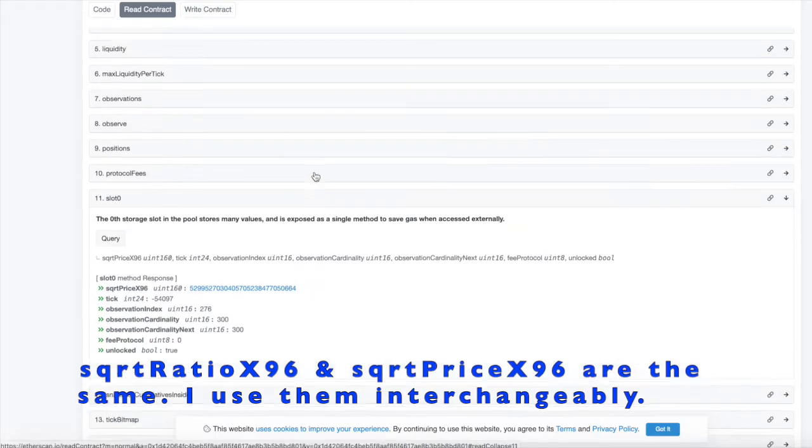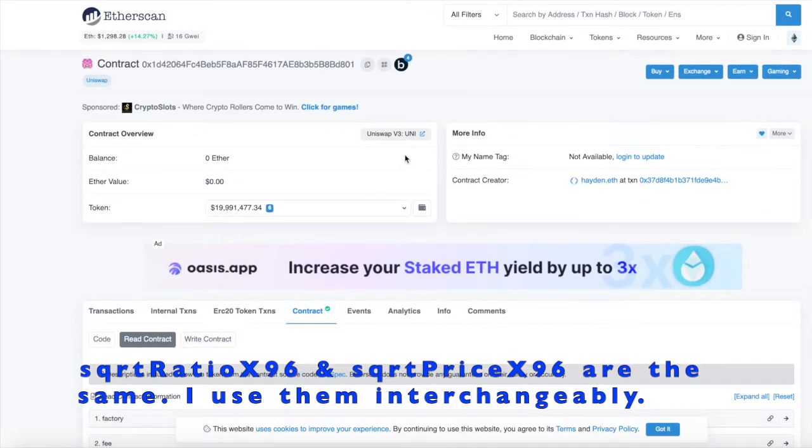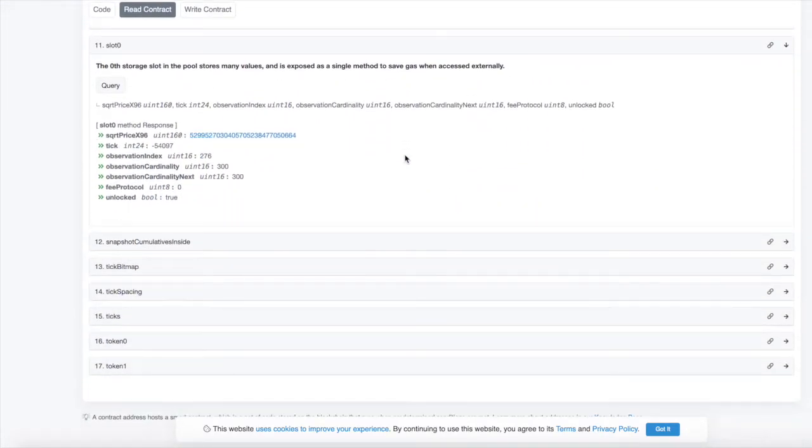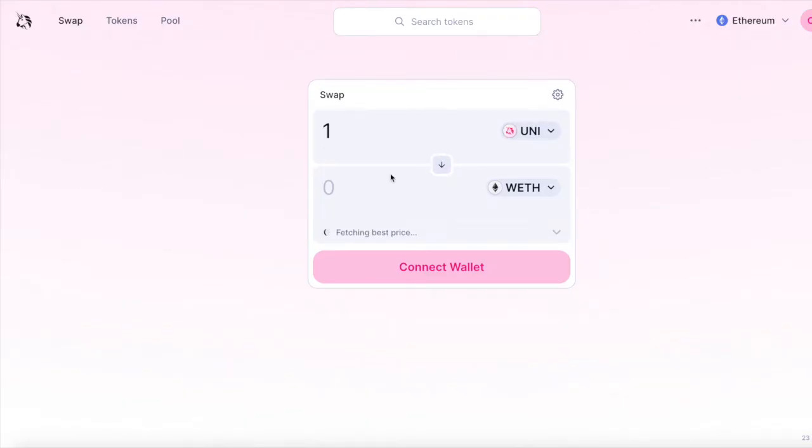So this right here is the contract for Uniswap over wrapped ether and this number here, this square root price x96, actually means the same thing as the ratio between these two numbers, Uniswap token and wrapped ether in the Uniswap app.